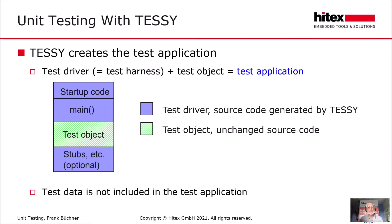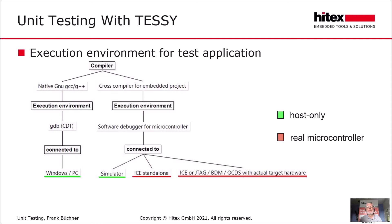The test application is created in source code, so TESI compiles it into something executable. There are basically two possibilities. You can use a native GNU compiler, and then the test application is compiled into a Windows executable and you can execute all tests on Windows without hardware. But it might be better to use a cross-compiler for an embedded microcontroller — usually the same cross-compiler used in your embedded project, with the same version number and optimization level — and TESI compiles the test application into a binary for a certain microcontroller.